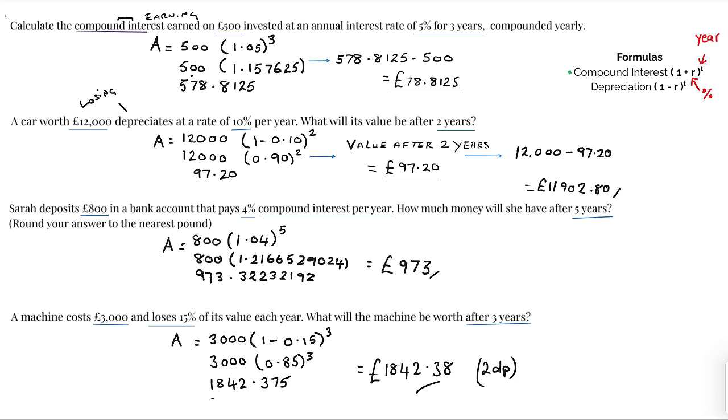So I plug that in as 1.05 because it's an adding - I've added my percentage to the power of three. That's my years. Put that into your calculator this bit first and you will get a big number 1.157625, and then finally I'm going to times that out which will give me 578.8125.